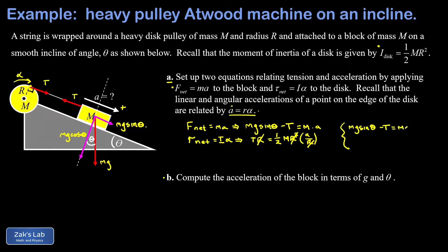In part b, we want to compute the acceleration of the block in terms of g and theta. This system of equations is already set up to use elimination—we just simply add them and the negative T and positive T cancel out. On the left hand side we get mg sine theta, and on the right hand side we get ma plus another one half ma, which is three halves ma. The m's cancel, and we solve for a and obtain an acceleration of two-thirds g sine theta.